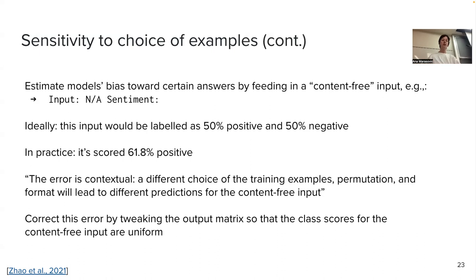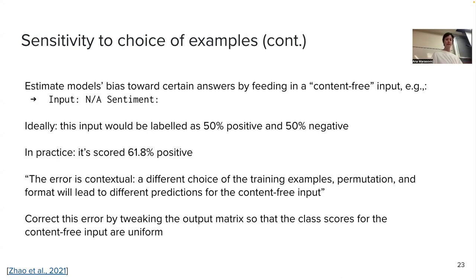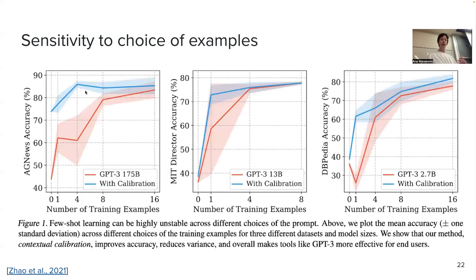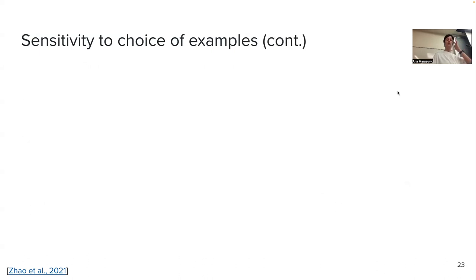They say that due to this bias, we will have these kinds of sensitivities. We can correct this by tweaking the output metrics such that these two labels are selected equally for a content-free prompt. Instead of getting 62% positive for the content-free prompt, they get 50%. As we have seen on the slides, that works to some extent and gives better performance — but there is still variation, which is why we repeat experiments a few times.